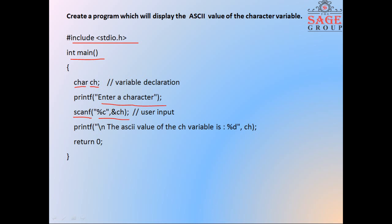Now, how do we know and identify the ASCII value of the given character? Here, this line will clear this confusion. We have written a message in printf: 'The ASCII value of the ch variable is %d', ch.